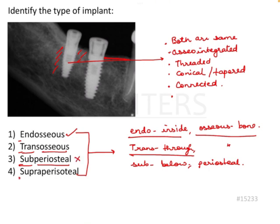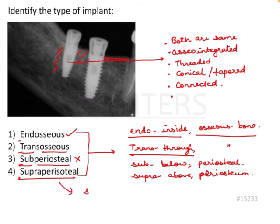So these are not subperiosteal implants. And supraperiosteal implant — 'supra' means above, so this would be above the periosteum. Again, these are not above the periosteum. If they were above the periosteum they would be in soft tissue, which is not correct either.